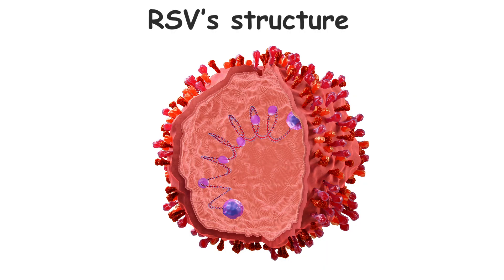Let's delve into the structural proteins of RSV that play a key role in its infectious cycle. First, the glycoprotein G — the chameleon of RSV. This protein aids the virus in evading the immune system due to its high variability. It's like a master of disguise, constantly changing to outwit our body's defenses.